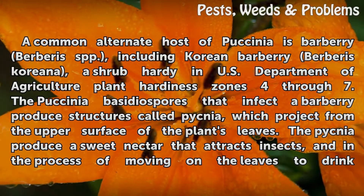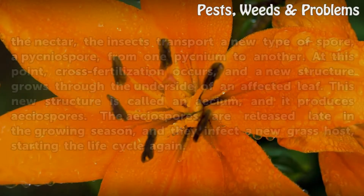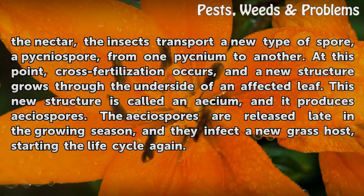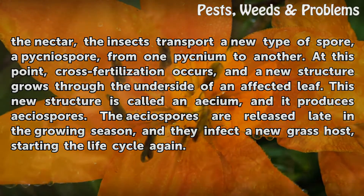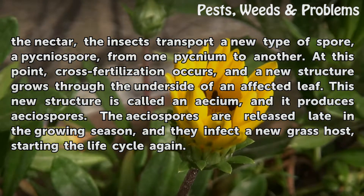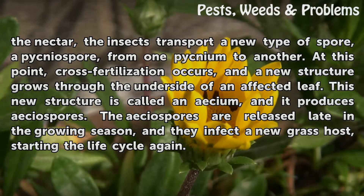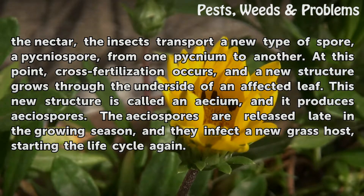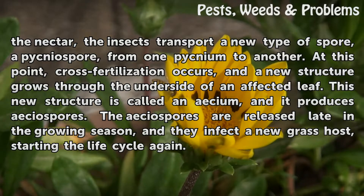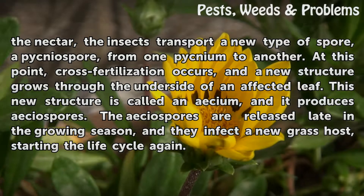The pyknea produce a sweet nectar that attracts insects, and in the process of moving on the leaves to drink the nectar, the insects transport a new type of spore, a pyknea spore, from one pykneum to another. At this point, cross-fertilization occurs, and a new structure grows through the underside of an affected leaf. This new structure is called an eesium, and it produces eesiospores.